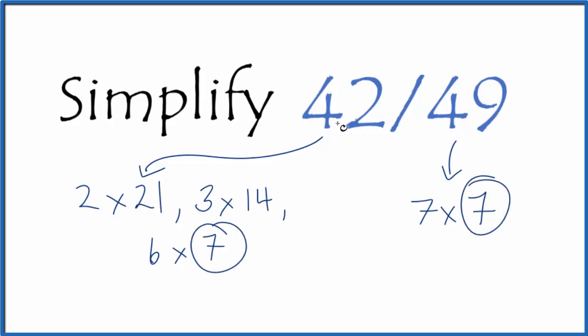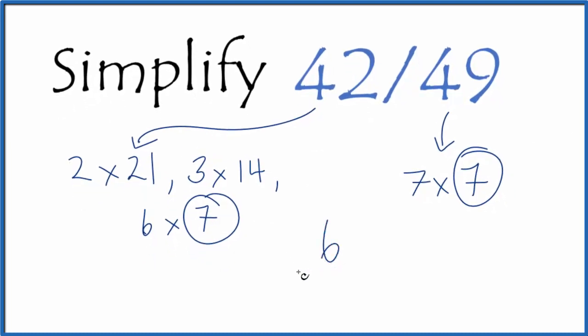So now we divide 42 by 7, that gives us 6. And we divide 49 by 7, that gives us 7. And the fraction, the simplified fraction for 42 over 49 is 6/7.